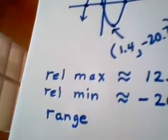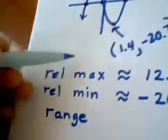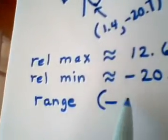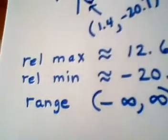Range, remember you're scanning from bottom to top. And really, the graph goes down forever. The graph goes up forever. So for the range, we have all reals, which we'll write negative infinity to infinity.